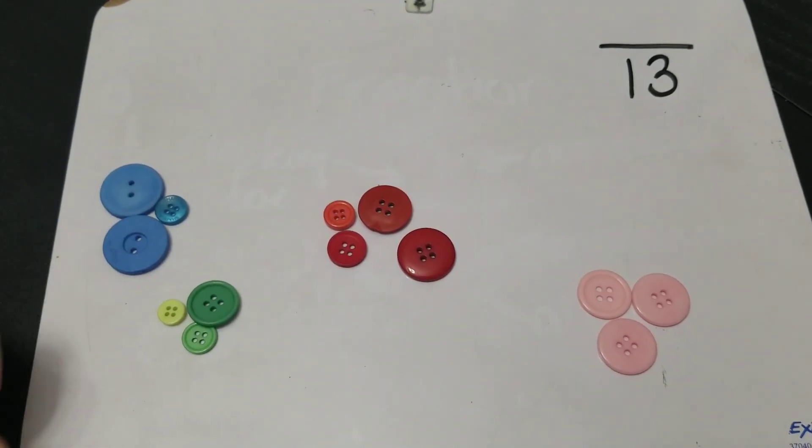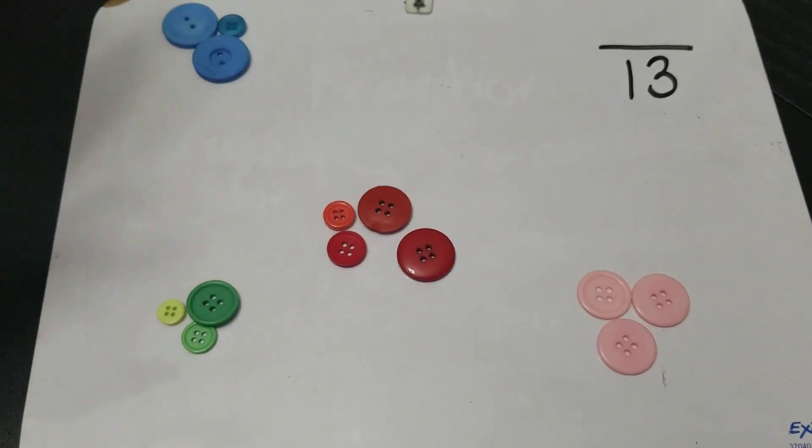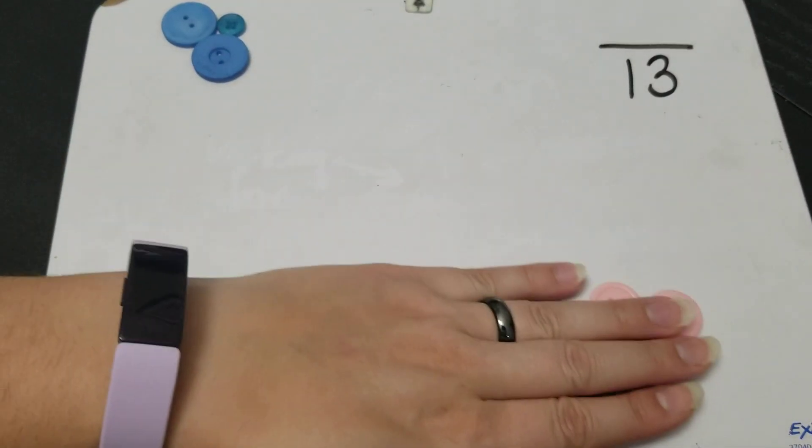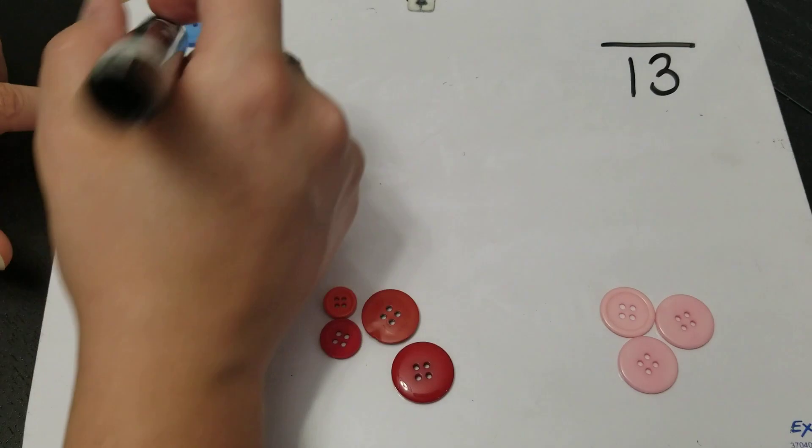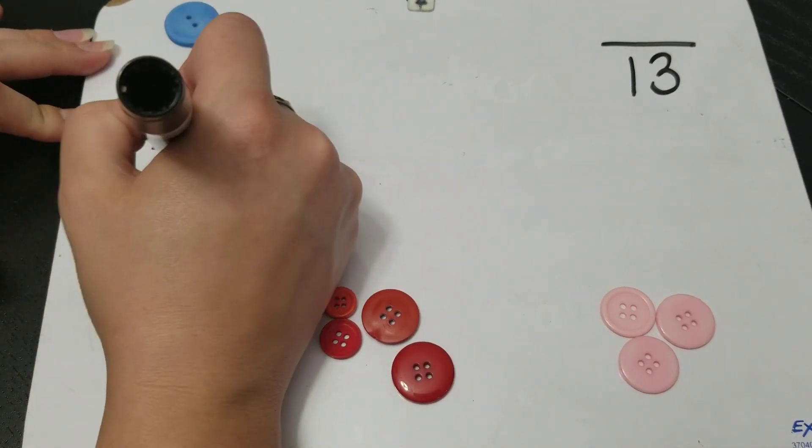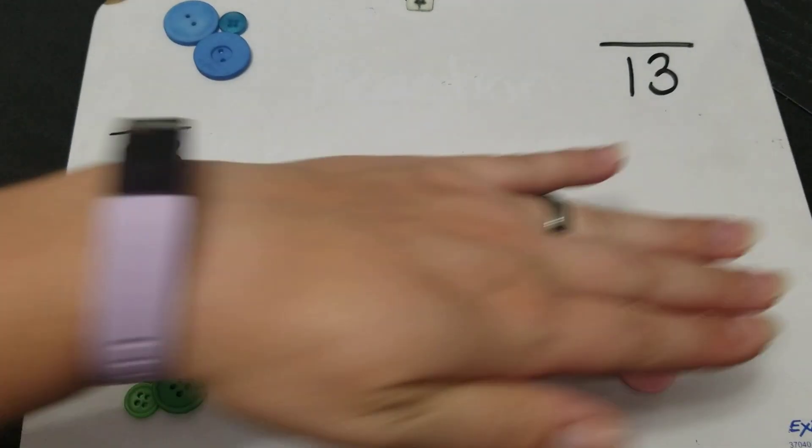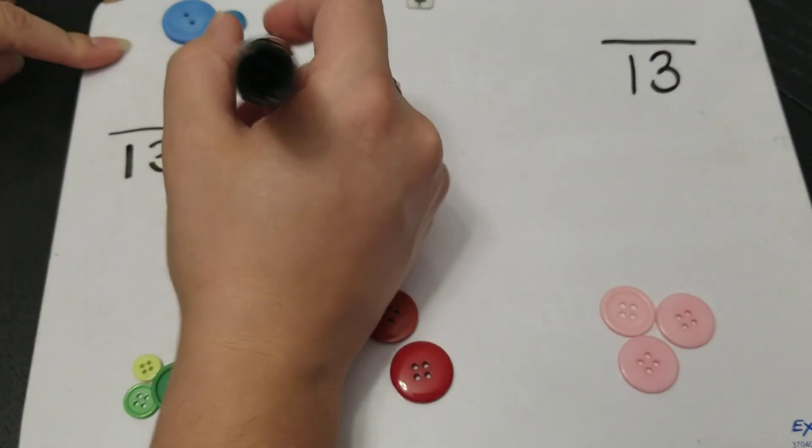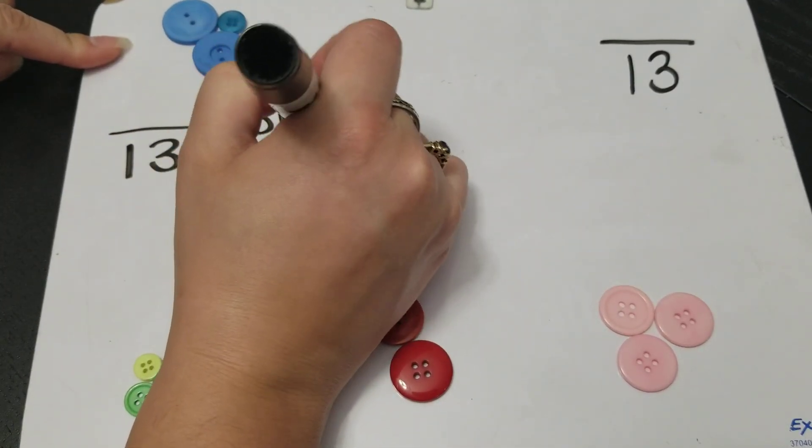So if I was going to start with one of them and I wanted to do a fraction for the blue ones, I'll move my other colors out of the way. I have 13 buttons all together. See all of them. All the buttons. But how many blue ones do I have?